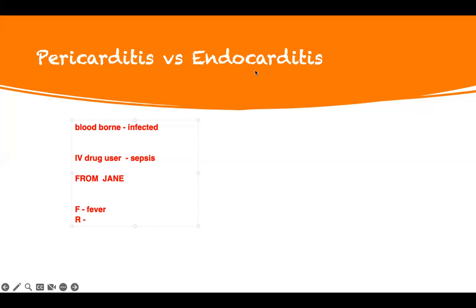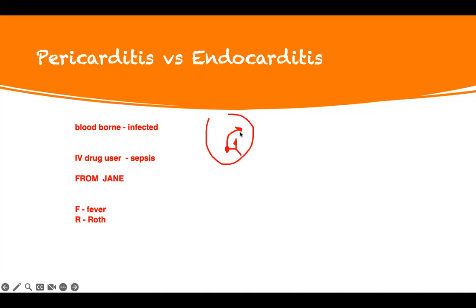R is Roth spots — in the retina, if you look at the retina, there's hemorrhage there because of the emboli. If this is the valve and you have vegetation on it, the problem is it's going to embolize. Every tissue on the endocardium can embolize and go to any organ in the body. So you can have signs and symptoms from any organ — and that is what Jane is telling you. Roth spots are found in the retina.